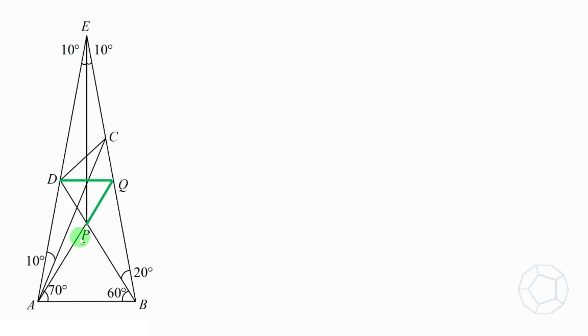We're going to construct some other special lines. Extend AP to meet the opposite side at the point Q. Next, we'll construct the line DQ. After this construction, we should look at two more triangles.